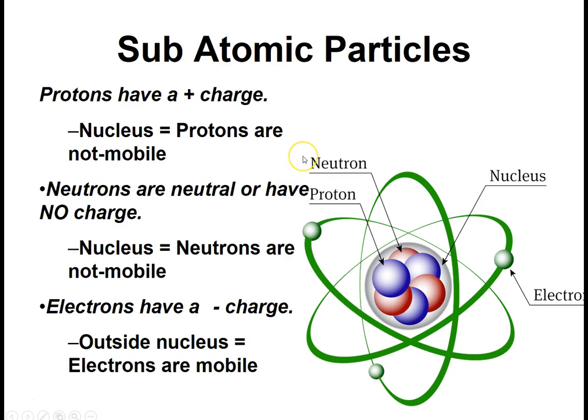About 2,000 times more massive than the electrons. The protons and electrons have charges. So we're going to define a proton as having a positive charge. And the electron has a negative charge. And then neutrons are neutral, so they have zero charge.